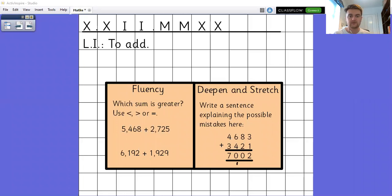So you've got two problems on the board here. You've got a fluency problem, which is which sum is greater. So you need to calculate both of those sums and work out which symbol should go between them. And then you've got a second one where someone has had a really good go at solving a column method addition problem, but they've made a couple of mistakes. So can you imagine that you're the teacher and can you write down what their mistakes are and how you can help them? So pause the video, have a go at those, and then I'll go through the answers.